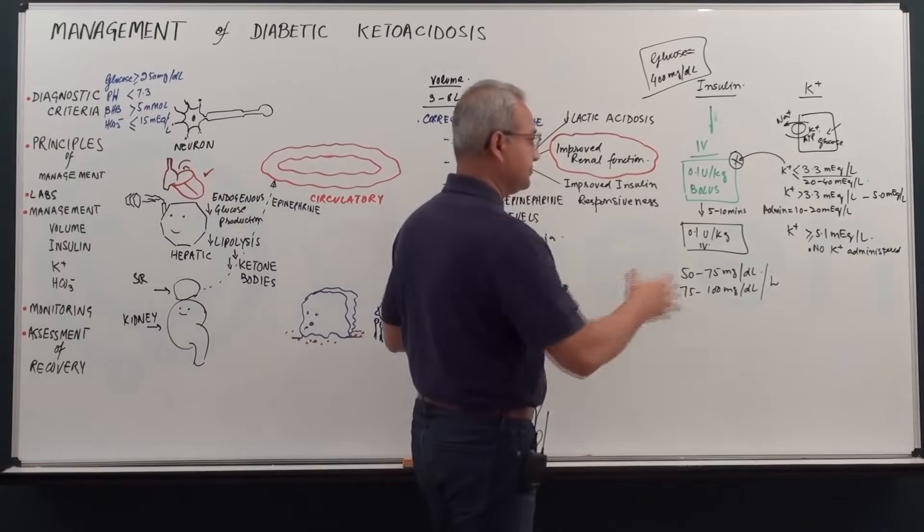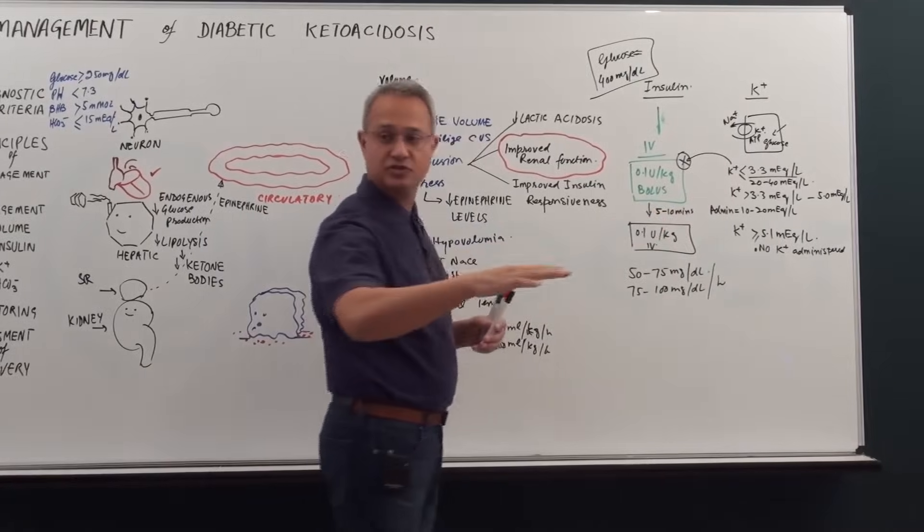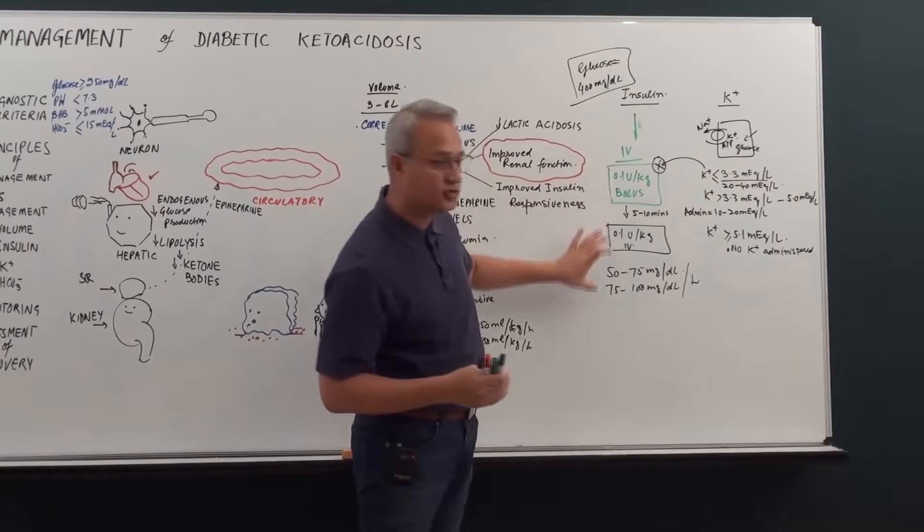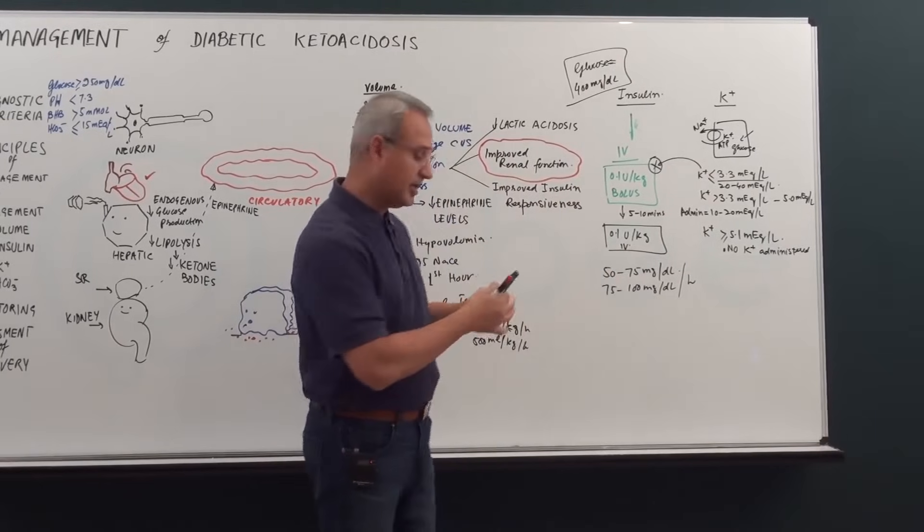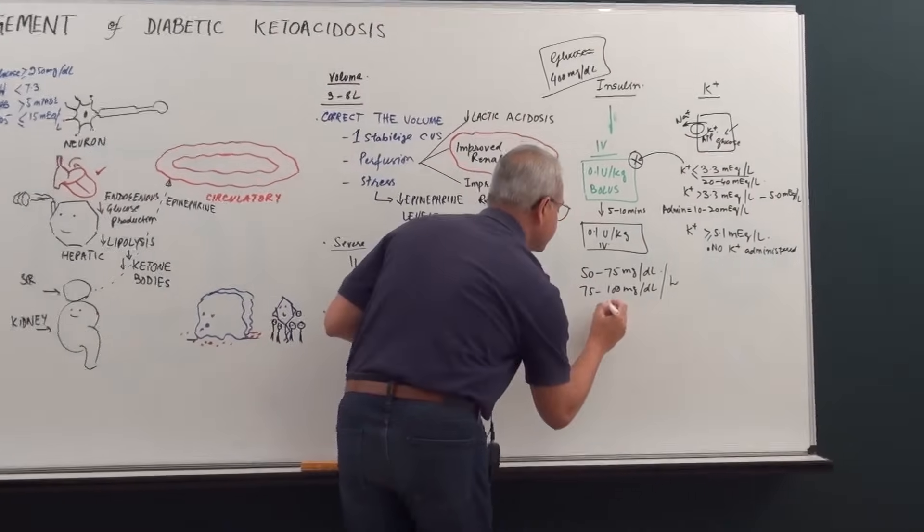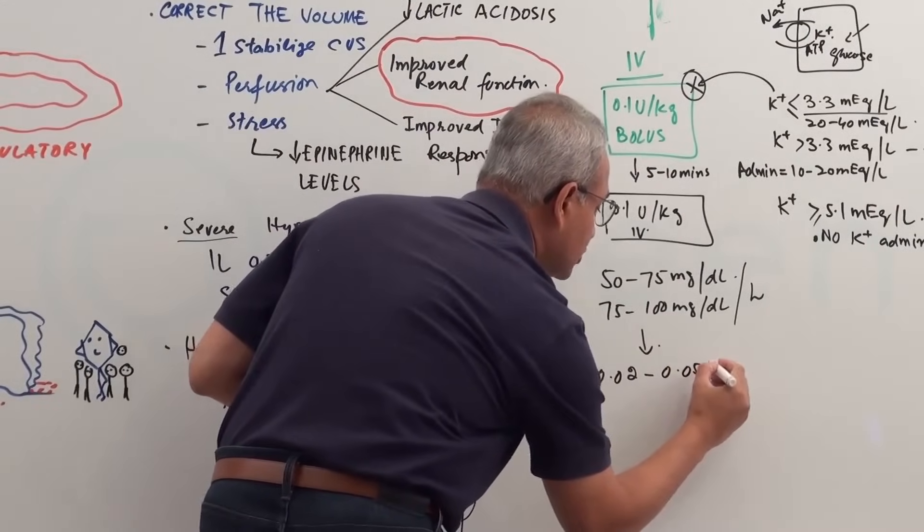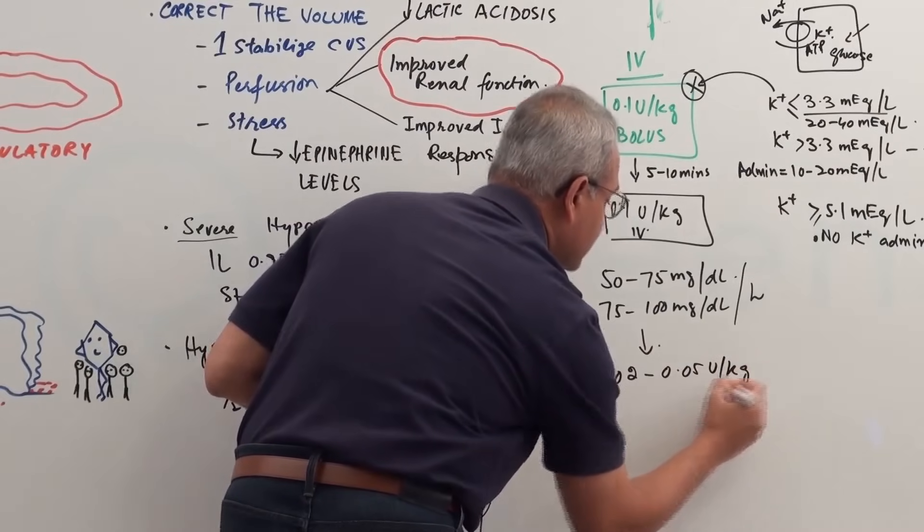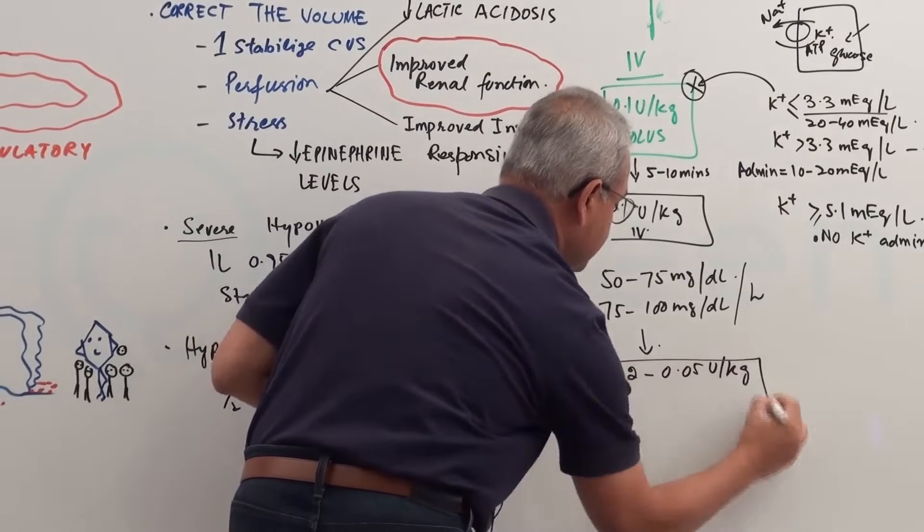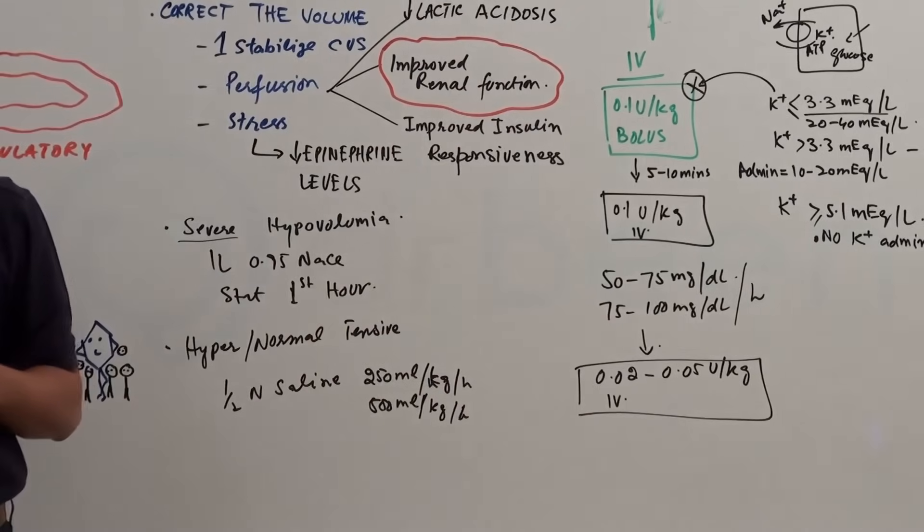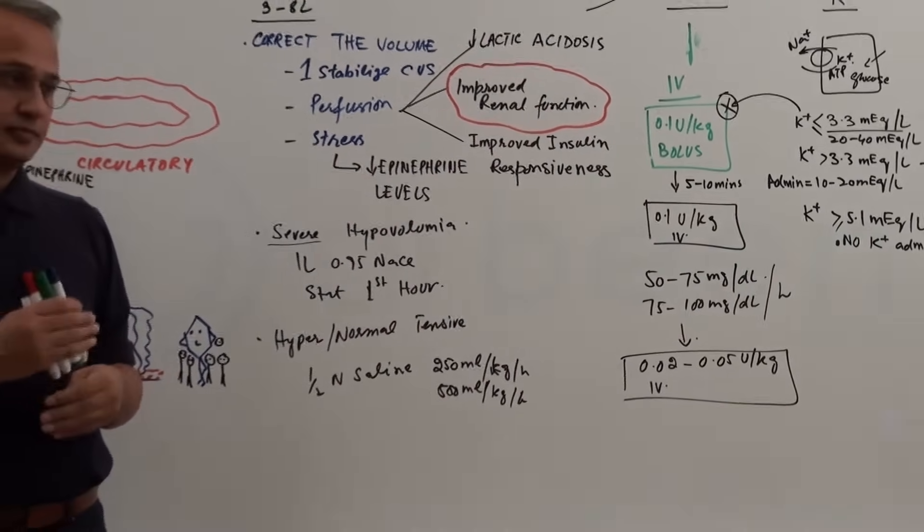Once you have reached somewhere about 200-ish, 250-ish, you can then half this insulin and you can actually go to 0.02 to 0.05 unit per kilogram IV.